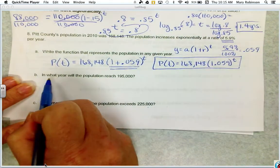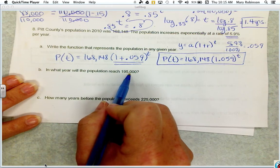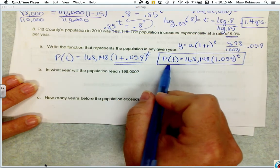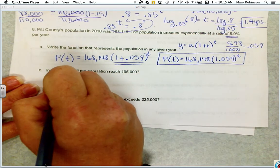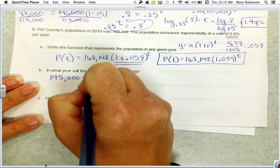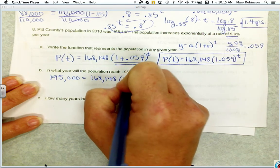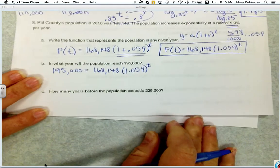Then it asks for part B, in what year will the population reach 195,000? So we want to plug in for p of t. So 195,000 equals 168,148 times 1.059 to the t power.